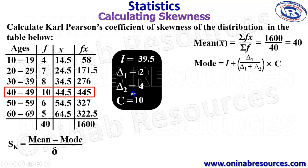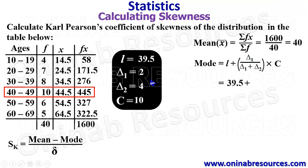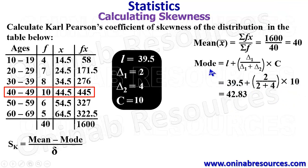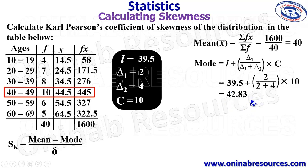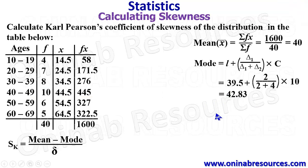So we have all the required items for calculating the mode. Substituting: L is 39.5, plus delta 1 which is 2, divided by delta 1 plus delta 2 which is 2 plus 4, multiplied by 10. Putting this in our calculator, we have the mode equal to 42.83. We can now see that since the mean is less than the mode, we are going to have negative skewness, or left skewness.